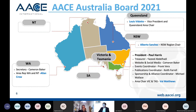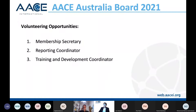In Australia, we have a very solid board currently led by Paul Harris as president. We have Louis Vidotto representing Queensland, Alberto leading New South Wales, Val Matthews in Victoria, and Alan Crowe in Western Australia. We are looking for people representing Northern Territory and South Australia. If you think you can contribute four or five hours per week, feel free to reach out. We have volunteering opportunities in membership secretary, reporting coordinator, and training and development coordinator — roughly 10 hours per month.